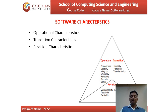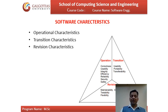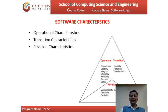Second are transition characteristics, which deal with the portability, usability, and transferability of your software. Third are revision characteristics, which define how easily changes can be made to the software. Revision characteristics include maintainability, testability, and flexibility.